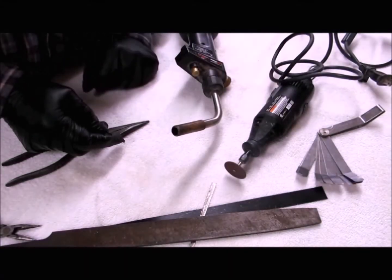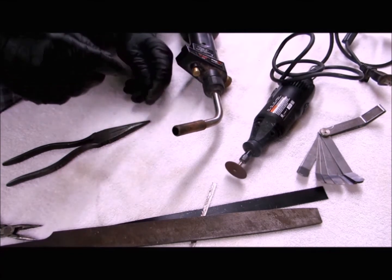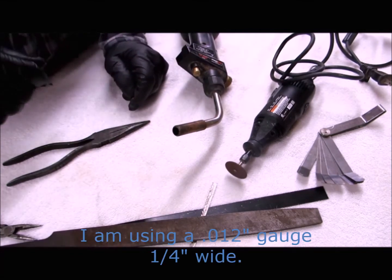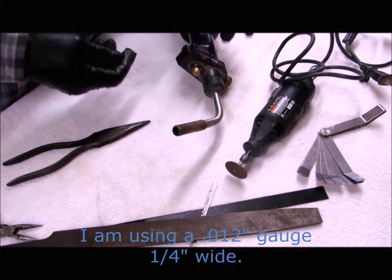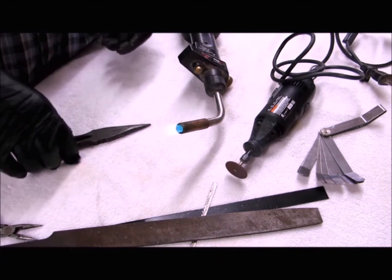I use a rotary tool with a cut off wheel to cut my gauge to width. There are three bends in the spring. The first is a short rounded bend. I'm going to use a propane torch to heat the spring and bend it.